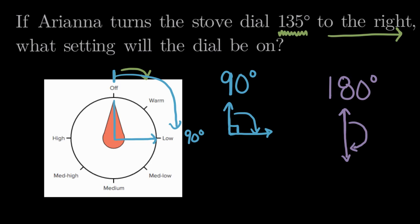So again, looking at our knob, if we started at the top and we went around 180 degrees, we would end up facing straight down at medium. This would be 180 degrees.